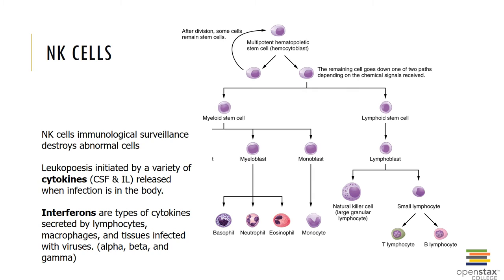Cytokines, also known as chemokines, help destroy organisms. Interferons are an example of a cytokine secreted by lymphocytes, macrophages, and tissues infected with a virus. There are three types of interferons: alpha, beta, and gamma. Alpha interferons are produced by virally infected cells to attract NK cells and enhance resistance to viral infection. Beta interferons secreted by fibroblasts slow inflammation in a damaged area. Gamma interferons are secreted by T cells and NK cells to stimulate macrophage activity.